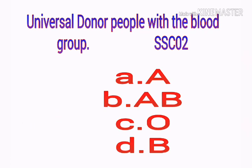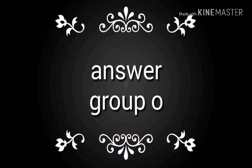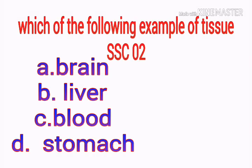People with which blood group are universal donors? Options: a) A, b) B, c) O, d) AB. Answer is group O.